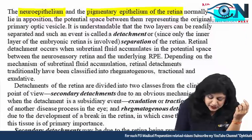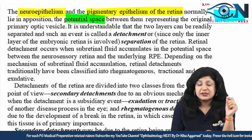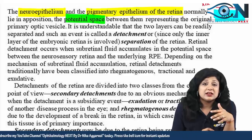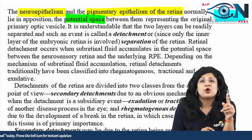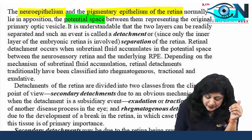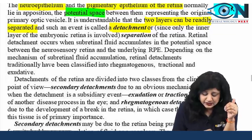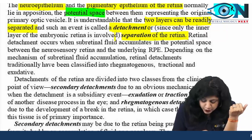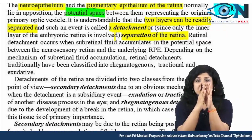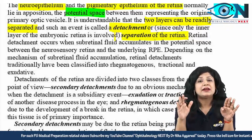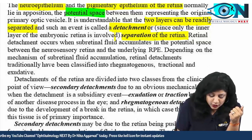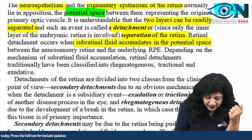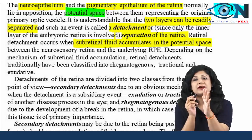The potential space between the two layers represents the original primary optic vesicle, which we discussed in the embryology topic. The two layers can readily be separated — that is the detachment, though actually it is a separation. When this separation occurs, the RPE layer and the neurosensory retina get separated and more fluid accumulates in that potential space.